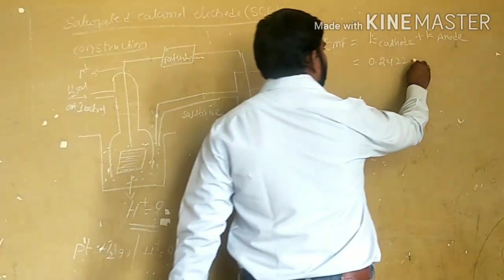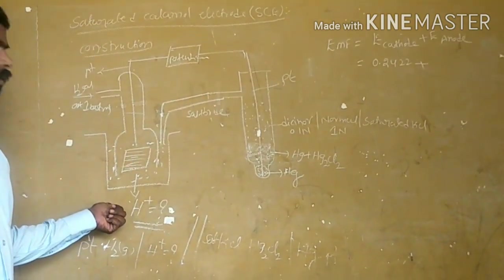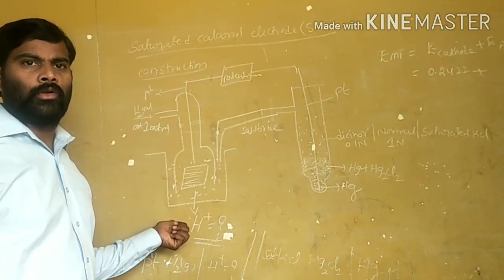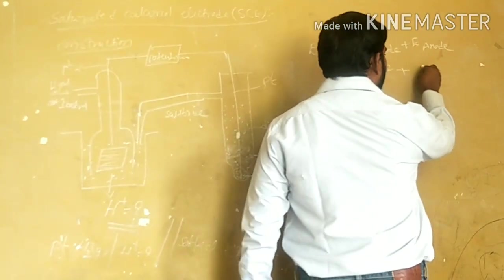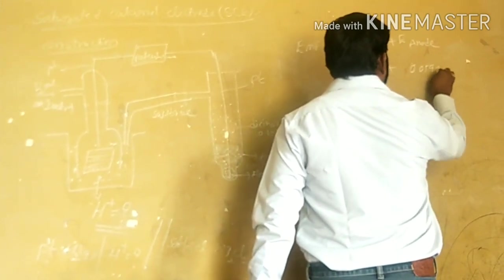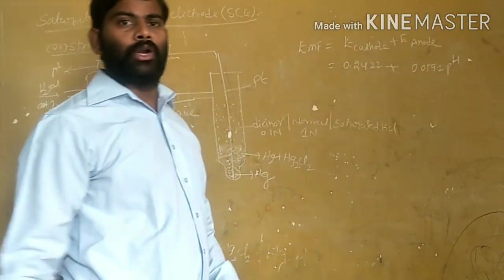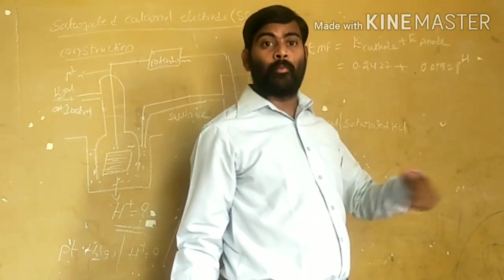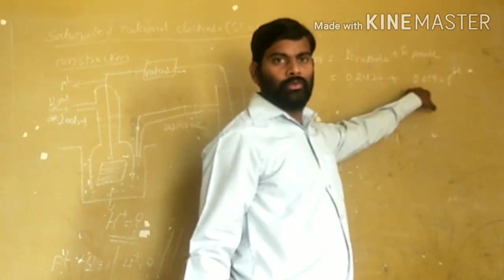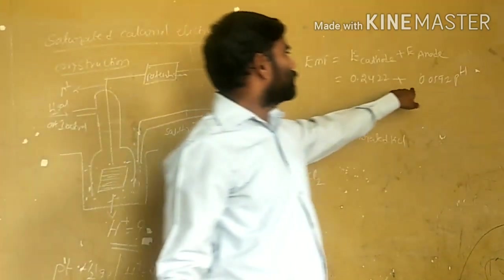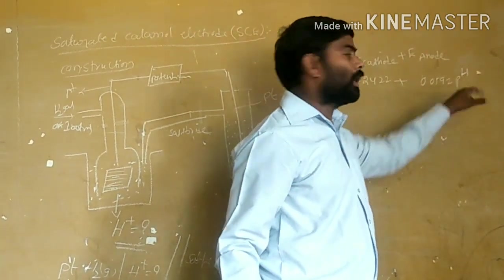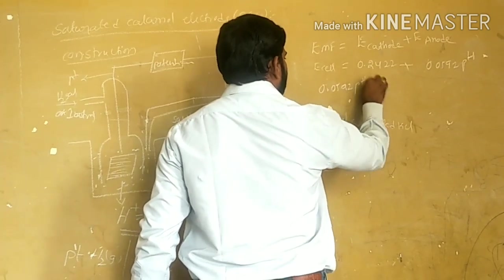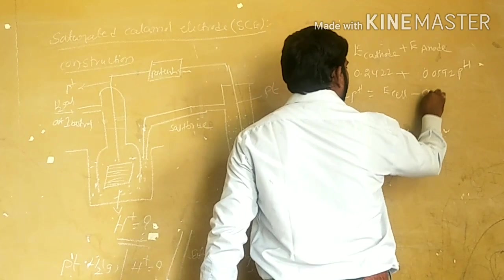From the previous video, we derived two formulas. When the hydrogen electrode acts as an anode, we get E = +0.0592 × pH. When it acts as a cathode, we get E = −0.0592 × pH. Here, the hydrogen electrode is acting as the anode, so its potential value is +0.0592 × pH.